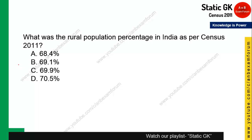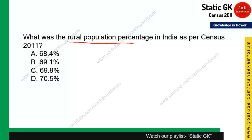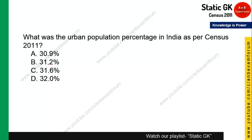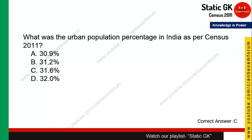Question 14: What was the rural population percentage of India as per Census 2011? The answer is more specifically 69.1%, not the approximated 68% mentioned earlier. Question 15: What was the urban population percentage? Subtracting from 100, the answer is 31.6% — this is the exact value, not an approximation, so note that down carefully.